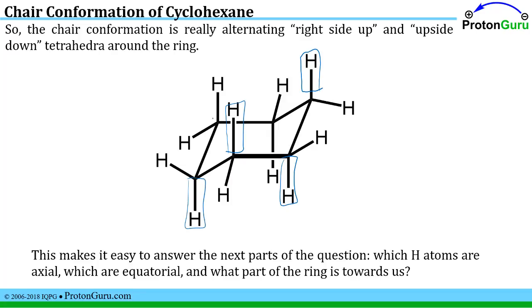upside down tetrahedron, right side up and upside down. If you look at any one of these individual carbons you can see it has the usual tetrahedral shape.